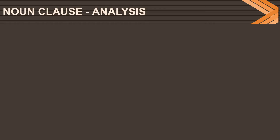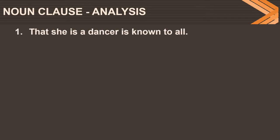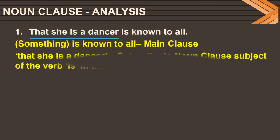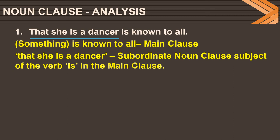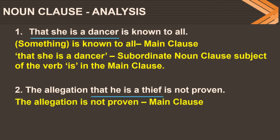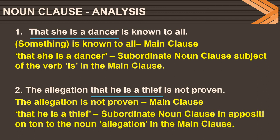Now let's do the clause analysis of noun clauses. For 'That she is a dancer is known to all': the main clause is 'Something is known to all,' and 'that she is a dancer' is a subordinate noun clause, subject of the verb 'is' in the main clause. For 'The allegation that he is a thief is not proven': the main clause is 'The allegation is not proven,' and 'that he is a thief' is a subordinate noun clause in apposition to the noun 'allegation' in the main clause.